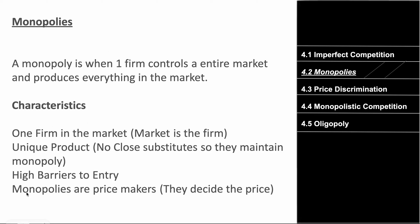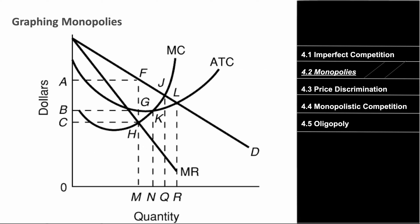Monopolies are price makers — since they're the only firm in the market, they can decide the price, whether to charge ten dollars or five dollars. In contrast, in perfect competition, firms were price takers because there were millions of firms competing. In a monopoly there's no competition, so the firm sets the price.